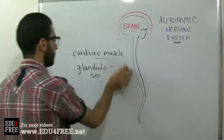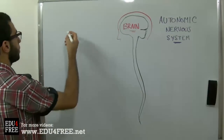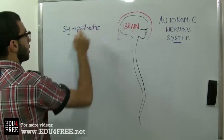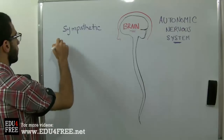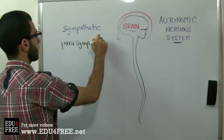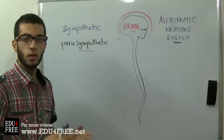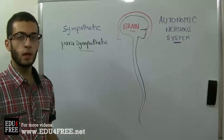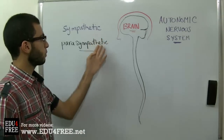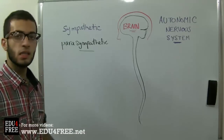The Autonomic Nervous System contains two subsystems. The first one is called the Sympathetic Nervous System, and the second one is called the Parasympathetic Nervous System. When one system causes an organ or a gland to do something, the other system does the opposite. So the effects of both systems are antagonized.